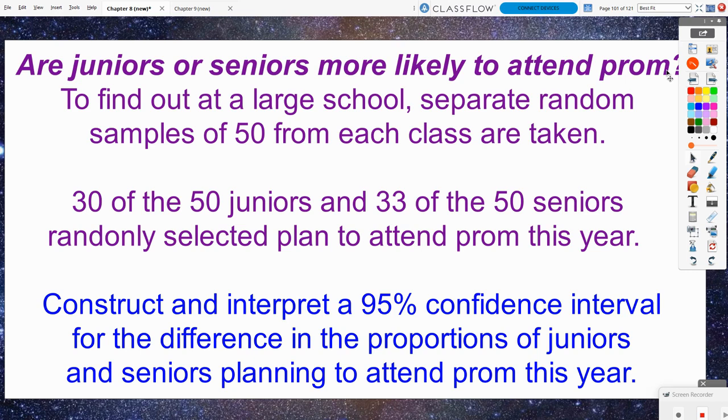To find out at a large school, separate random samples of 50 from each class are taken. 30 of the 50 juniors and 33 of the 50 seniors randomly selected plan to attend prom this year. We are going to construct and interpret a 95% confidence interval for the difference in the proportions of juniors and seniors planning to attend prom this year.